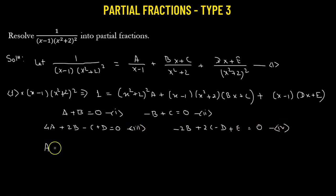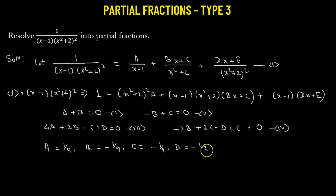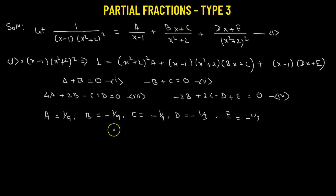Solving equations 1, 2, 3, and 4 gives us the values: A equals 1 over 9, B equals negative 1 over 9, C equals negative 1 over 9, D equals negative 1 over 3, and E equals negative 1 over 3.